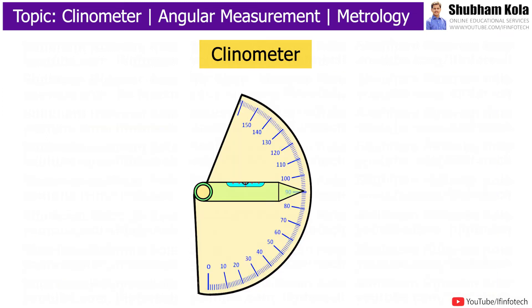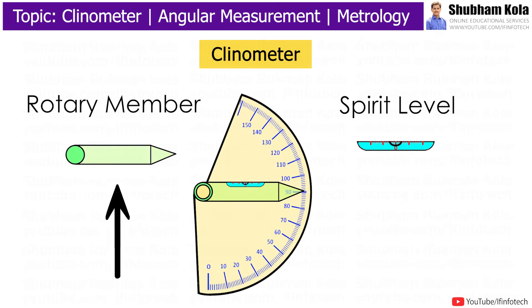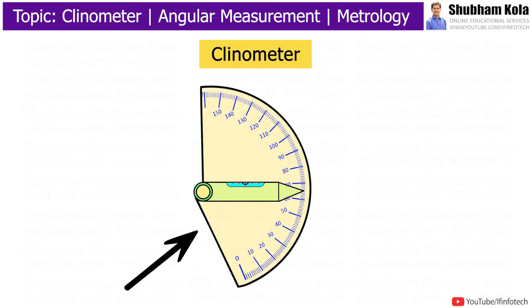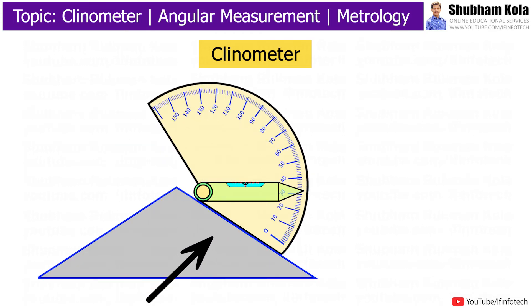In this device, a spirit level is mounted on a rotary member carried in housing. An inclination of rotary member is measured using spirit level. One face of housing forms face of instrument and there is one circular scale on housing.